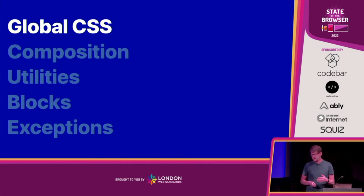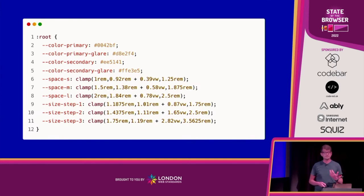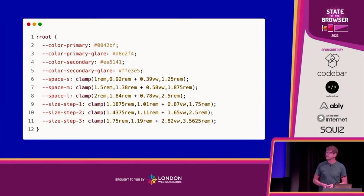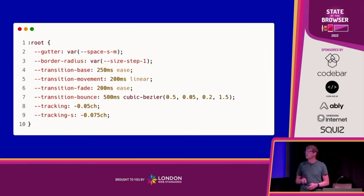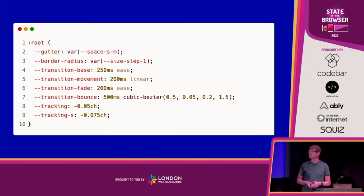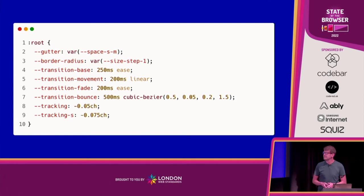Now we've got a reset, we can apply CUBE to the mix. The most important part is global CSS — you do as much as you can as high up as possible. The first thing is setting some variables. These are actually generated by Tailwind via some design tokens and that spits out a root block of custom properties. I can then use those variables to handwrite some of my own: a gutter variable, some border radius, transitions, and letter-spacing.